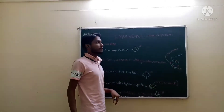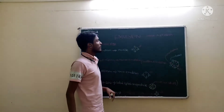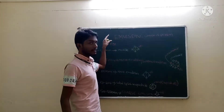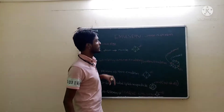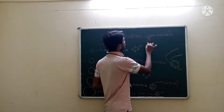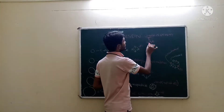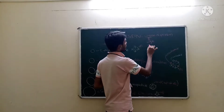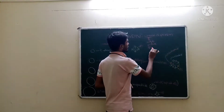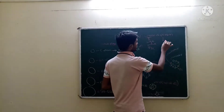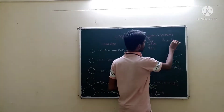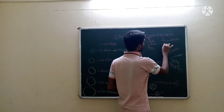The topic is emulsion. Emulsion is a coarse dispersion — 'coarse' means large, so the particle size is large. Dispersion means uniform distribution.